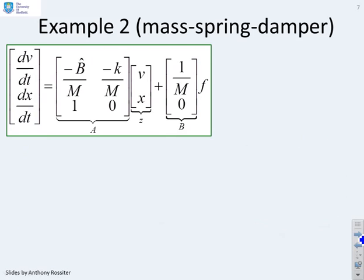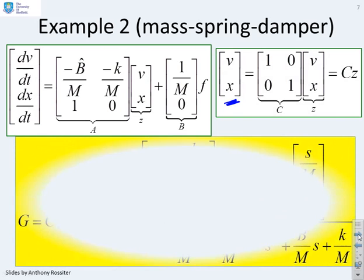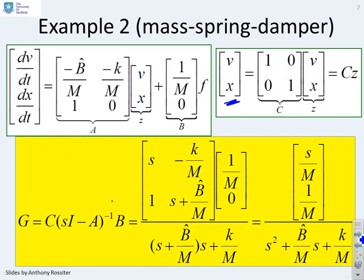What about the mass-spring-damper? Well the mass-spring-damper had a state space model like this, and I'm going to say that I'm particularly interested in an output which is defined as [v, x], which is Cz. So my transfer function now is given by C(sI - A)^-1 B.